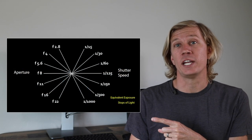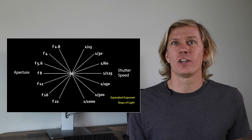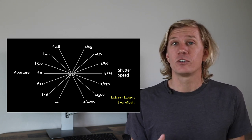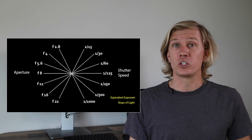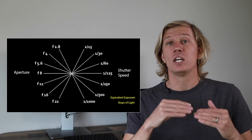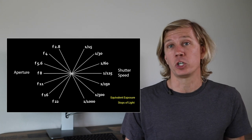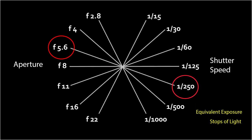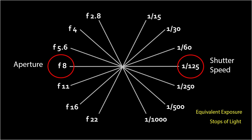Let's add the diagram for equivalent exposures. This looks very confusing and intimidating — full stops, two-third stops, one-third stops. The key takeaway is not necessarily memorizing all these numbers, but understanding the relationship between these exposures. If you change one thing, you're going to have to adjust another to maintain an even exposure. So let's say we have an aperture of f5.6 and a shutter speed of 1/250th of a second — that creates a great exposure. If we change our aperture from f5.6 to f8, we'll have a darker image, so we'd have to slow down the shutter speed to 1/125th of a second to maintain that equivalent exposure. Strobes add another element for certain types of scenes.